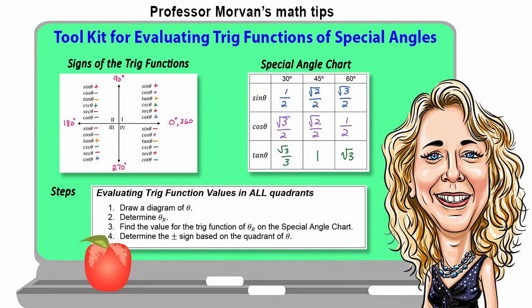To summarize, here is your toolkit for evaluating trig functions of special angles. You will need three items: your chart showing the signs of the trig functions, your special angle chart giving the trig function values, and the four steps for evaluating trig function values in all quadrants.